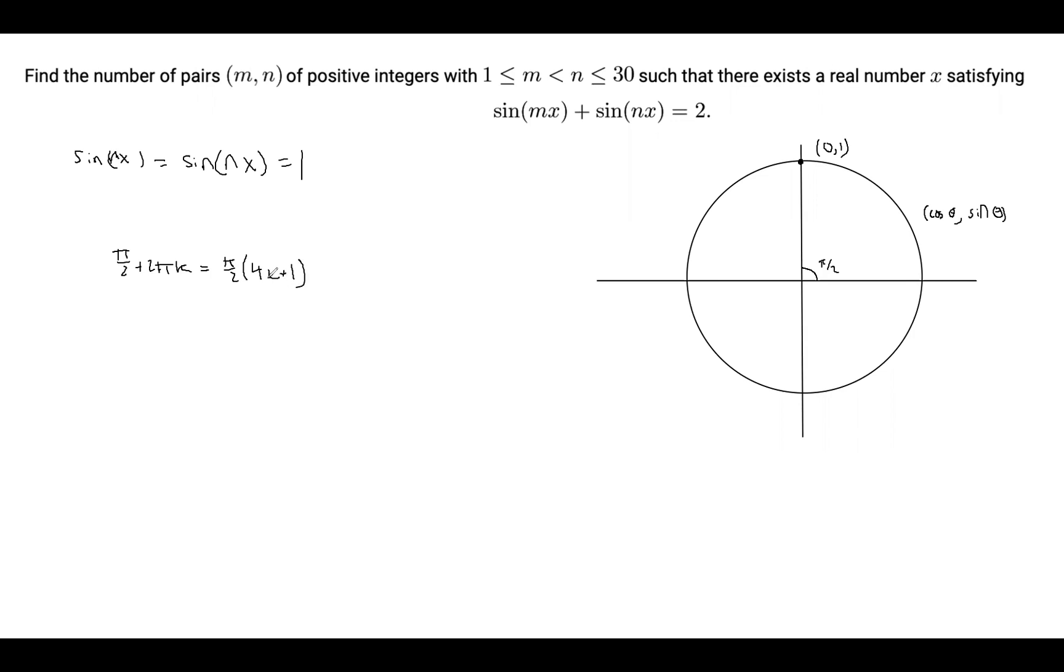So mx and nx would both have to be equal to π/2 times (4k + 1). And we're going to notice that sin(0) = 0, which means that mx and nx are non-zero. And this might seem like a small fact, but what it means is that we can essentially divide by mx or nx, and that's going to be important.